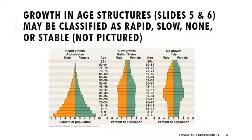Age structures can be classified using specific terms. Rapid growth, like the India example, shows a triangular shape with many more individuals in lower age ranges. Slow growth shows a more equal distribution between upper and lower age ranges. No growth shows an age structure that slants inward, with fewer and fewer people being born — as we saw with Japan.